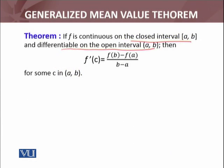Let's see the mean value theorem: if f is continuous on the closed interval [a, b] and differentiable on the open interval (a, b), which are Rolle's theorem conditions, then f'(c) equals [f(b) - f(a)] / (b - a). In mean value theorem, there is no such condition that f(a) equals f(b).